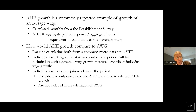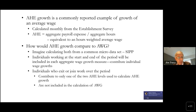Average hourly earnings growth is commonly reported as an example of the growth of an average wage. It's calculated monthly from the establishment survey and constructed from aggregate payroll expense divided by aggregate hours — so implicitly it's equivalent to an hours-weighted average wage. Individuals working at the start and end of a period will be included in each aggregate wage growth measure, but individuals who exit or join work contribute to only one of the two average hourly earnings levels used to calculate growth, and they're not included at all in the calculation of average wage growth.